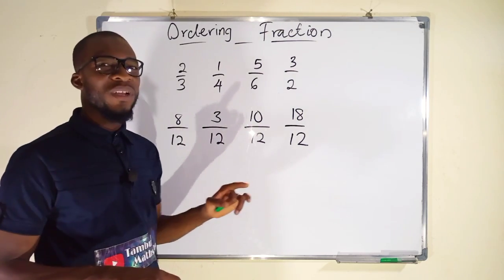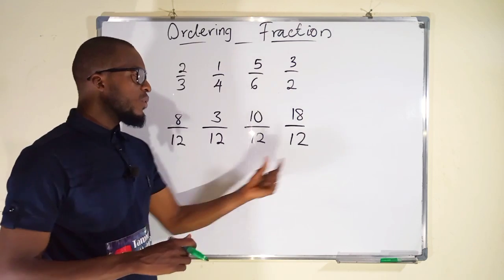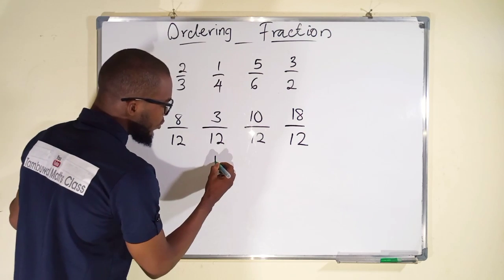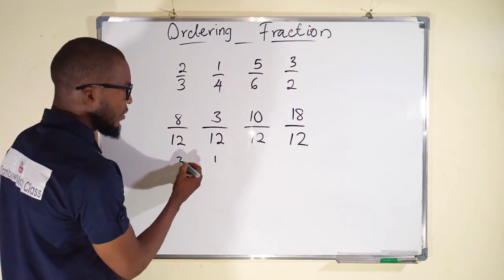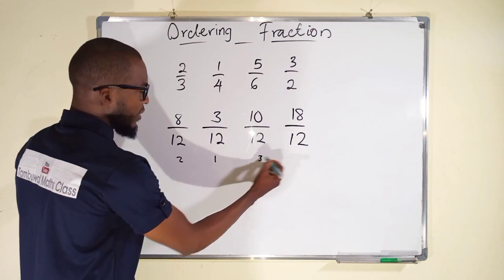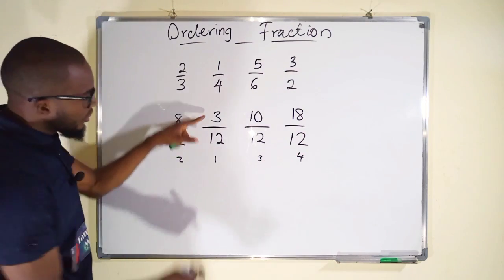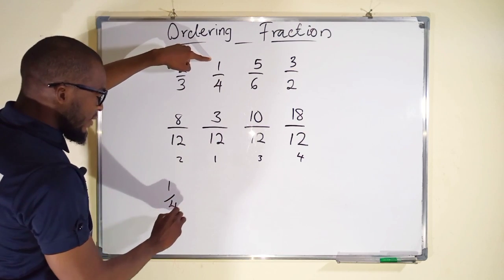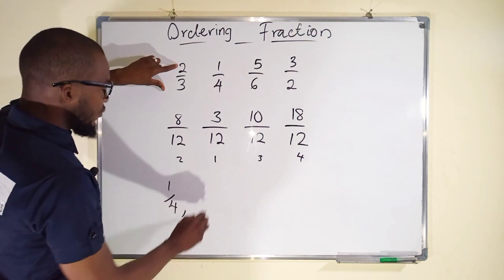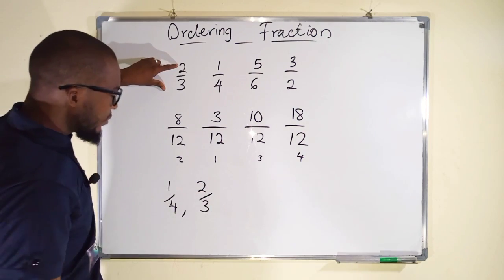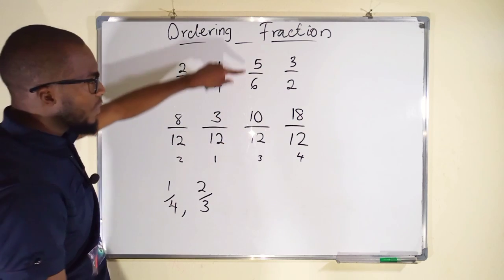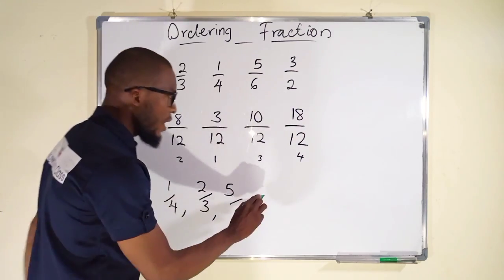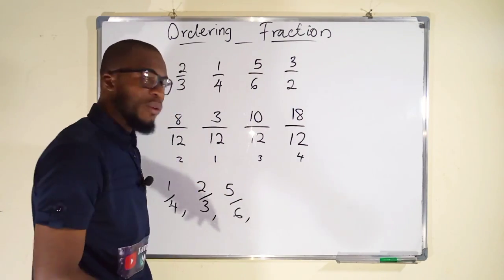The biggest fraction here is the one with the biggest numerator, while the smallest is the one with the smallest numerator. Starting from the smallest in ascending order: 3 over 12, which is 1 over 4; followed by 8 over 12, which is 2 over 3; then 10 over 12, which is the same as 5 over 6; and lastly 18 over 12, which is the same as 3 over 2.